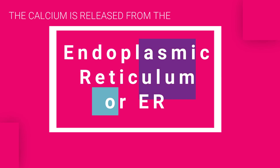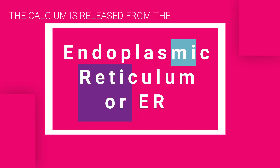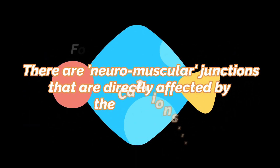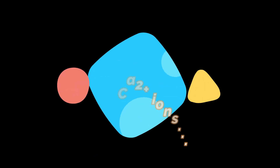Calcium is released from the endoplasmic reticulum or the ER. It is a second messenger which essentially helps in muscle contraction, nervous signalling, fertilization, and even cell division. For nervous signalling, there are neuromuscular junctions that are directly affected by these calcium ions.